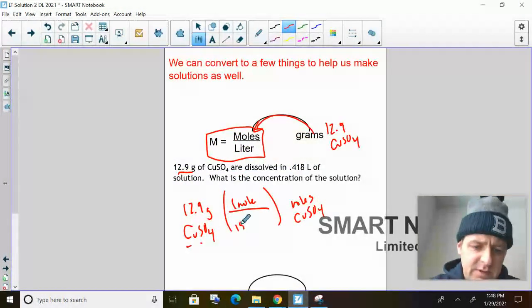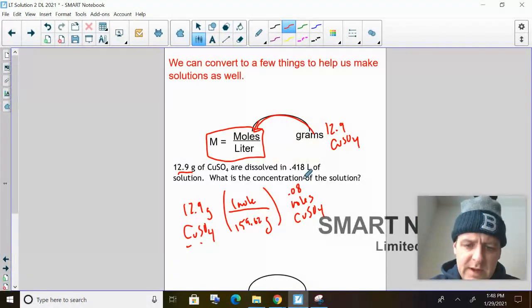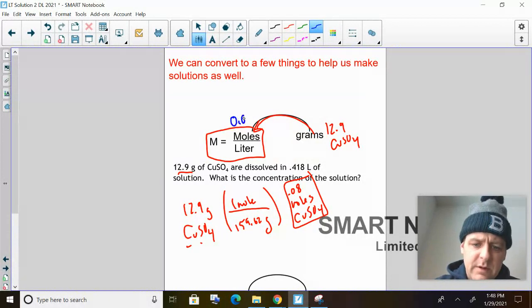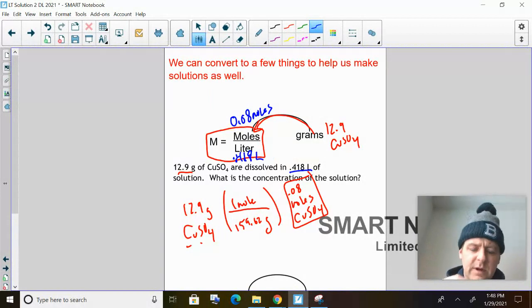So 159.62 grams for every one mole, I'm going to get 0.08. Sweet. Now, so I got 0.08 moles. And we know that it's in 0.418 liters. So go ahead and do the math quick.